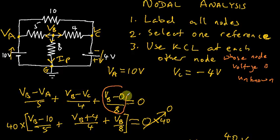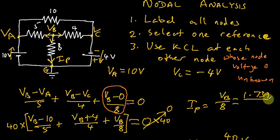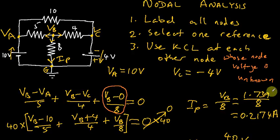IP is actually this term we have over here — that was the current coming downwards. So it's the voltage at this node minus the voltage at this node, divided by this resistance. In other words, it's the potential difference across the 8-ohm resistor divided by 8 ohms. So we can find our IP as being equal to VB over 8, which is 1.739 divided by 8, and that gives us 0.2174 amperes.